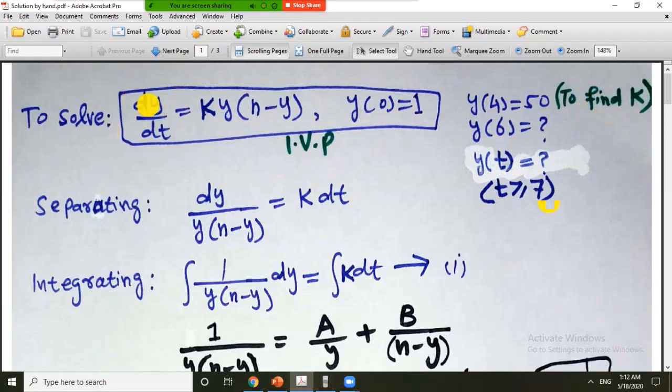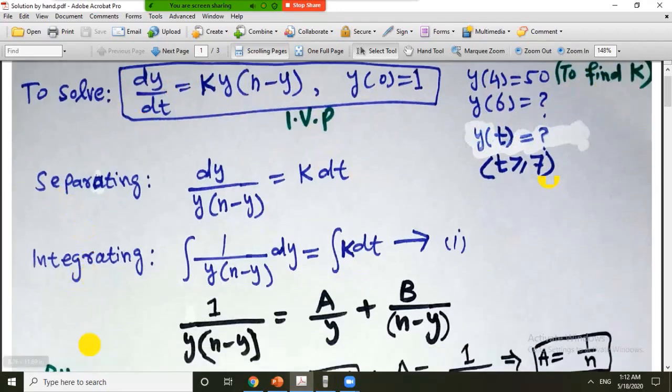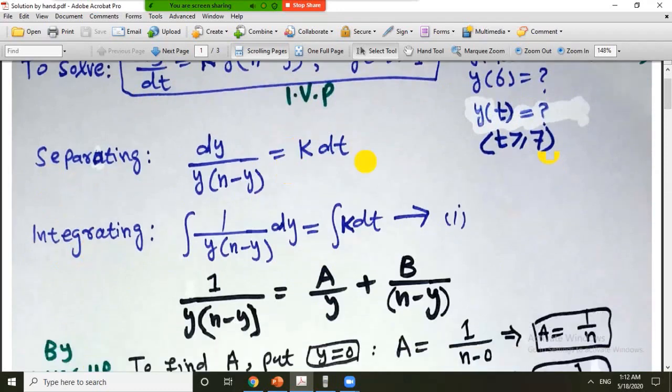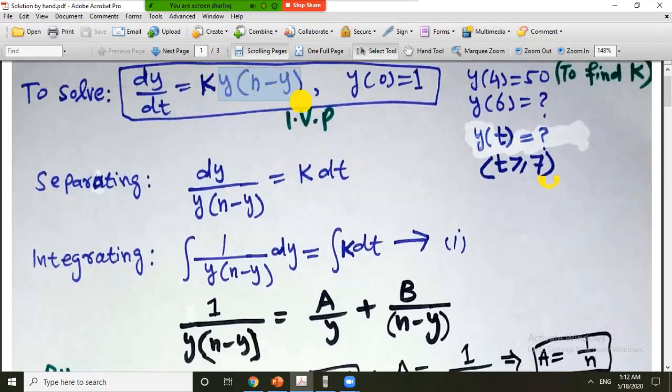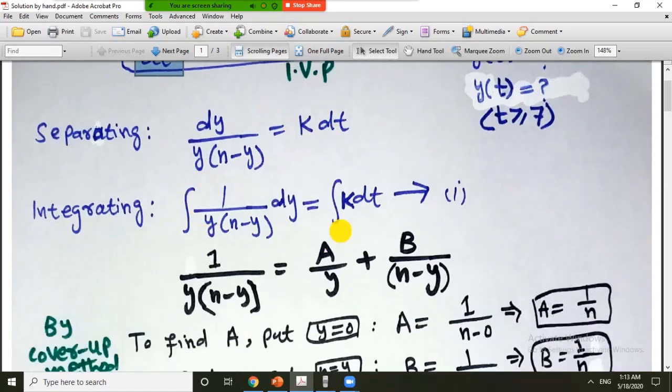There are three steps for solving: separating, integrating and simplifying. So it is easy to separate the variables by dividing by y into n minus y and multiplying with dt. We have separated the variables and now integrating.